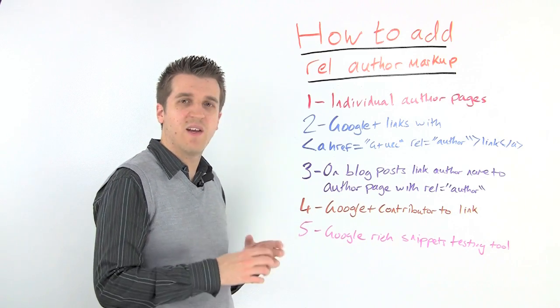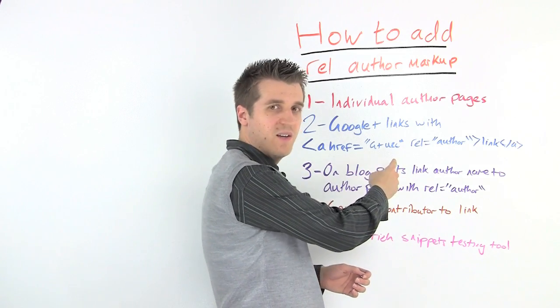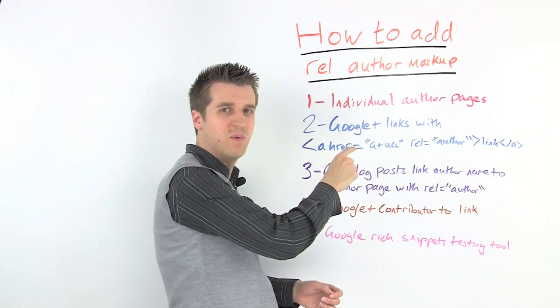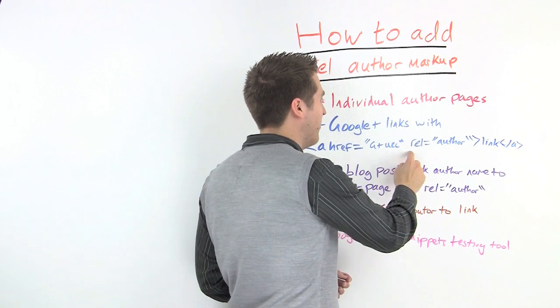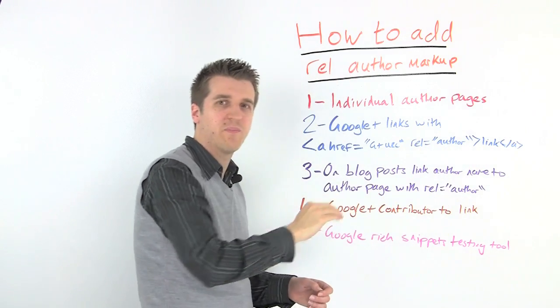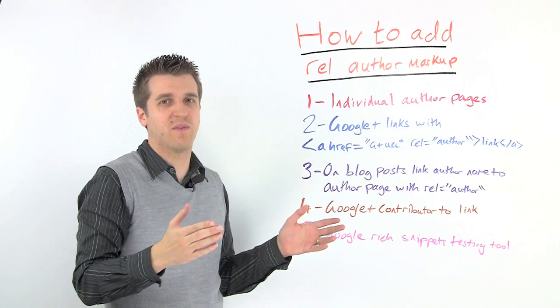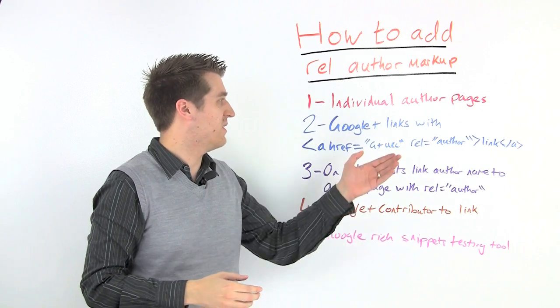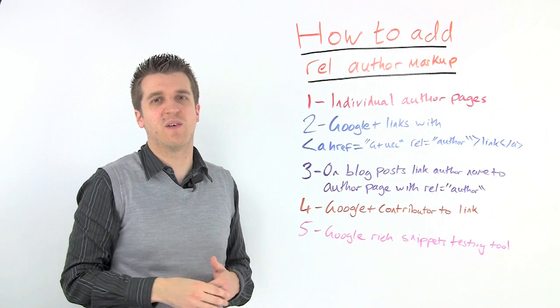That link is structured like any other hyperlink, so it has a href equals, and then the link goes here, which in this case is the Google+ URL, and then instead of closing the command, you then write rel equals author in speech marks, and then you close it. You then add it to your link as you normally would, and then you close off the href command with slash a as usual. That's all you need to do for each of those author pages.